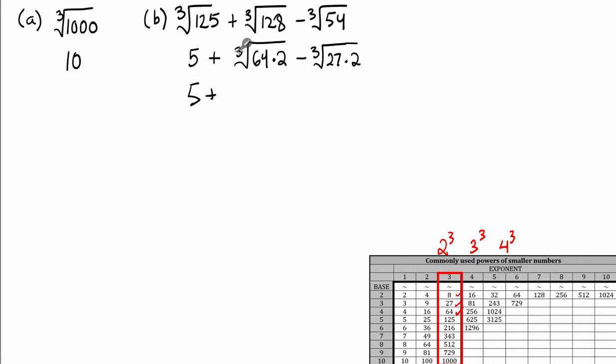Now, the cube root of 64, consulting the table, is 4. So this middle term simplifies as 4 times cube root of 2 minus the third term simplifies as 3 times cube root of 2.